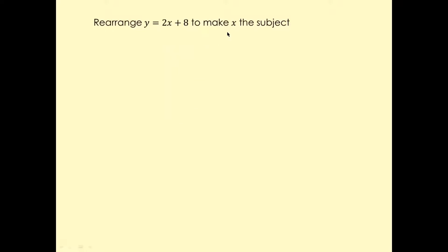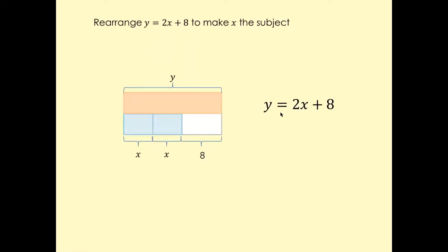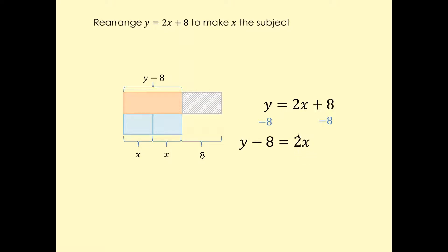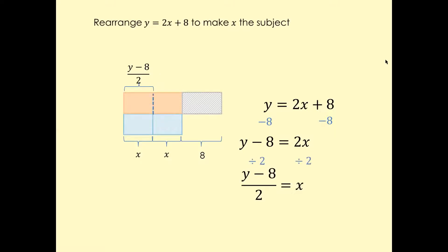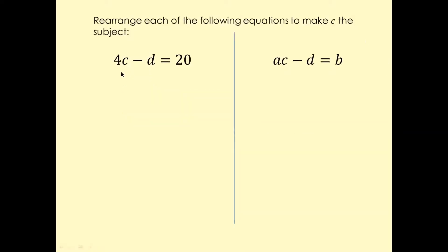So Y equals 2X plus eight and we want to make X the subject. First, move plus eight to the other side — minus eight on both sides. Plus eight and minus eight cancel and you're left with Y minus eight equals 2X. Then move the two to the other side — divide by two on both sides — and you're left with X equals Y minus eight over two.